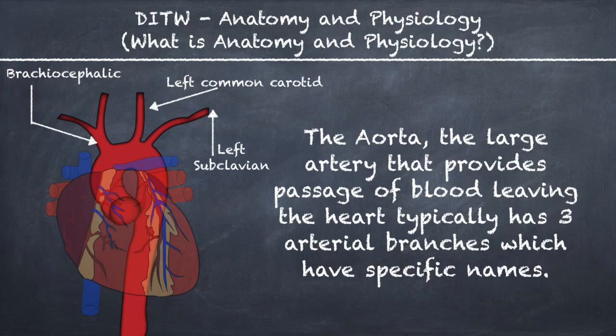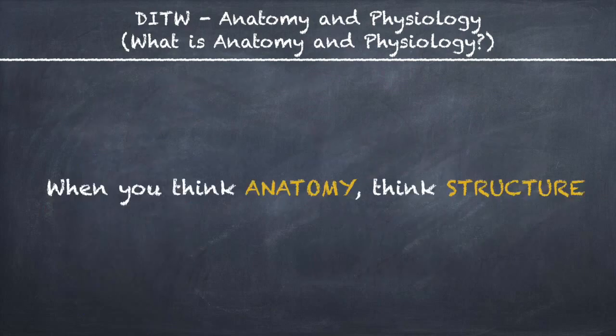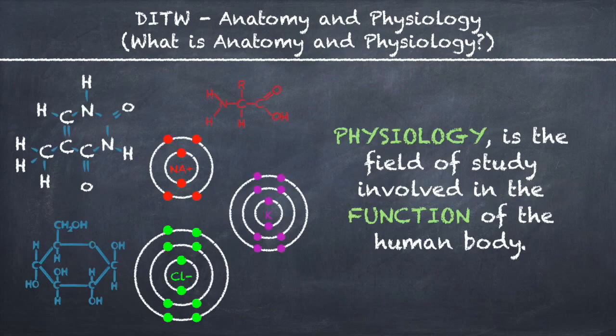The aorta, the large artery that provides passage of blood leaving the heart, typically has three arterial branches which have specific names. When you think anatomy, think structure.